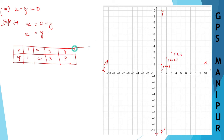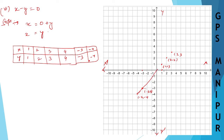Let us take some negative numbers as well. When x is minus 3, y is also minus 3. When x is minus 4, y is also minus 4. Join all these points — passing through the origin — and this is the line for x minus y equal to 0.